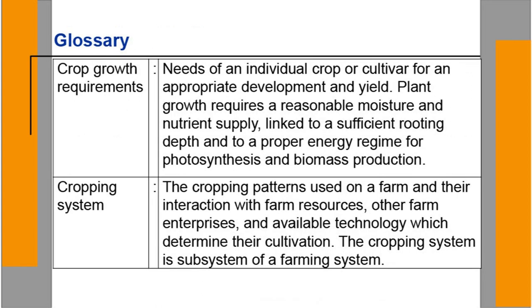Glossary — some difficult words. Crop growth requirements: the needs of an individual crop or cultivar for appropriate development and yield. Plant growth requires reasonable moisture and nutrient supply linked to sufficient rooting depth and a proper energy regime for photosynthesis and biomass production.